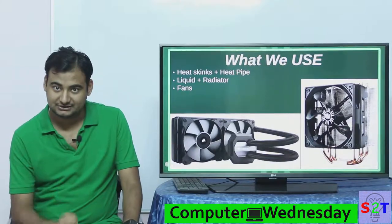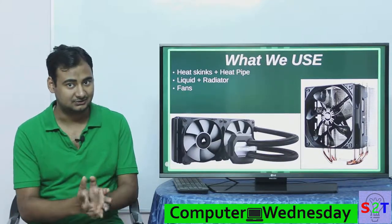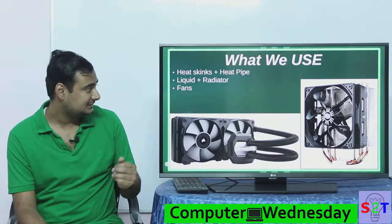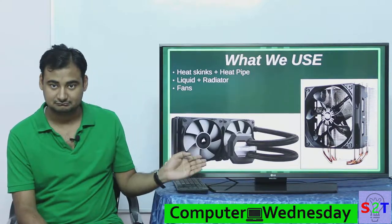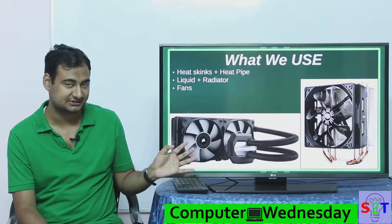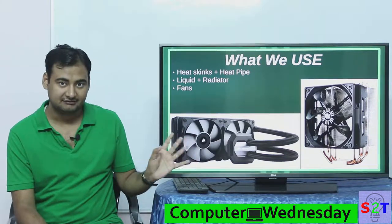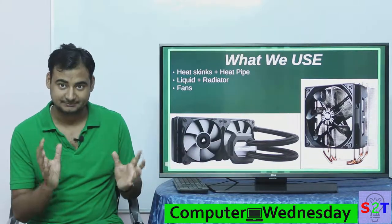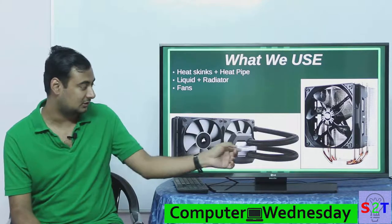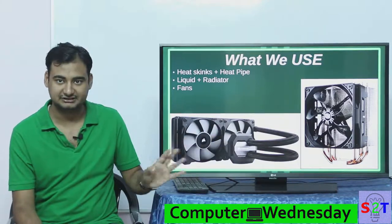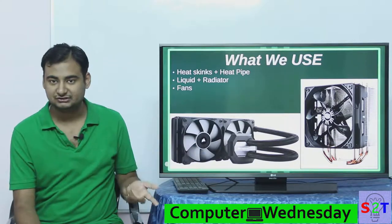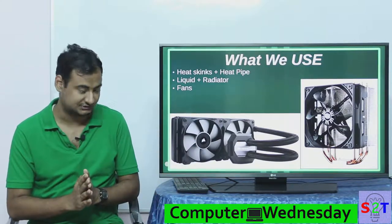So what do we use? First, we use heatsinks plus heat pipes. Then we have something like AIO — all-in-one cooling solutions — basically a liquid system sold as a package where you have a radiator, pump, cooling block, and fluid, everything included. And we use fans to do the final heat dissipation.